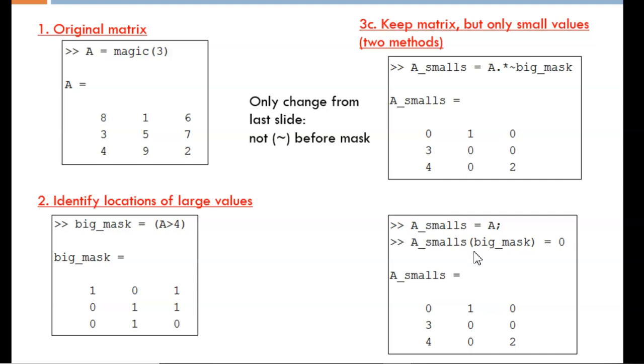Now, this command can be read as, go into a_smalls. Wherever we see a true in the mask, reassign that index to have a value of zero. So, all the big numbers turn into zeros.